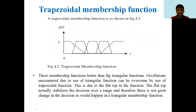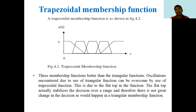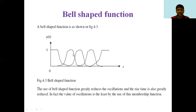Triangular membership functions are mainly used to reduce oscillations in systems. Trapezoidal membership functions are better than triangular functions — oscillations encountered with triangular functions can be overcome using trapezoidal functions due to the flat top, which stabilizes the decision over a range. Therefore there is not a great change in decision as would happen with triangular functions. Bell-shaped functions greatly reduce oscillations and the rise time is also greatly reduced.